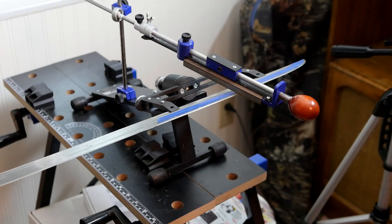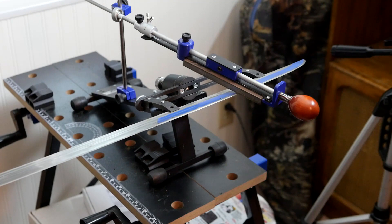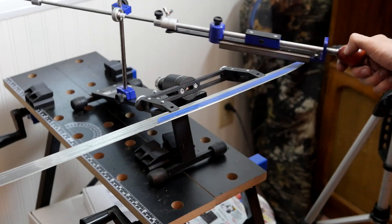All right, here's the new sharpening system that was sent to me for review. This is the Hapstone V6 Deluxe and it's very suitable for sharpening long blades and particularly swords because it's got